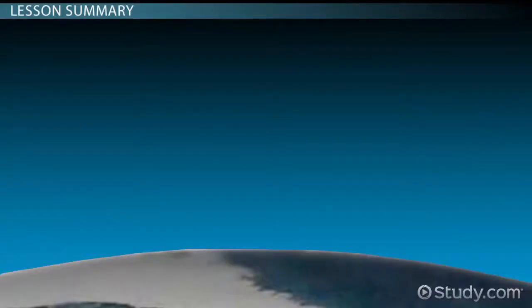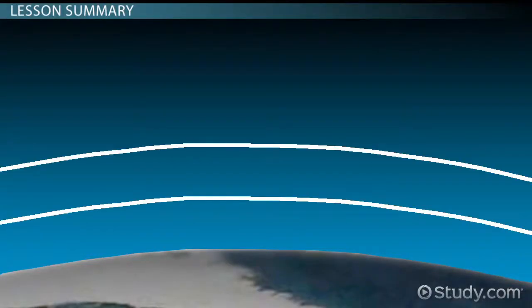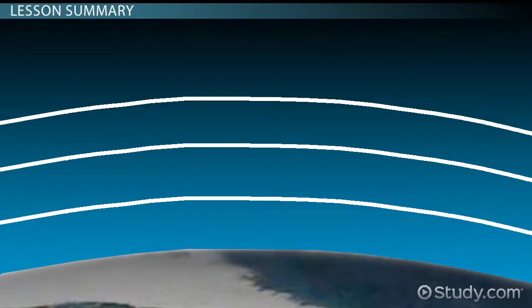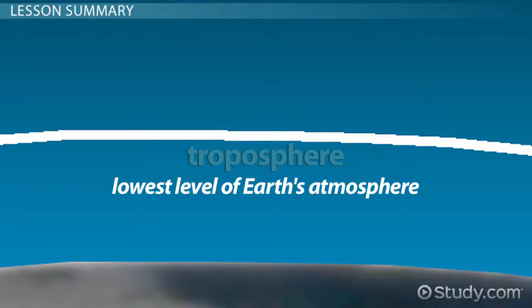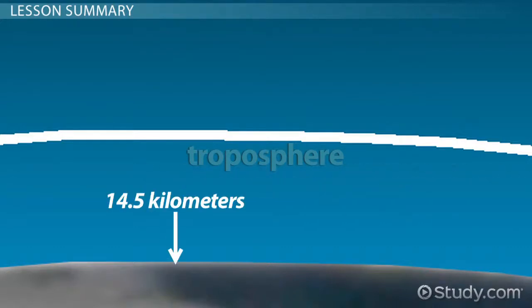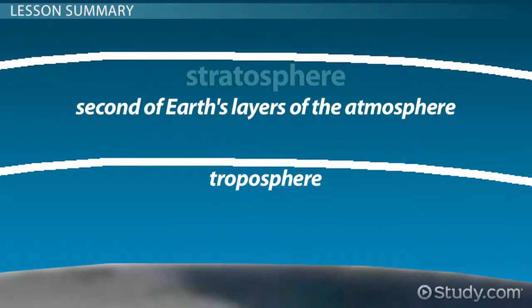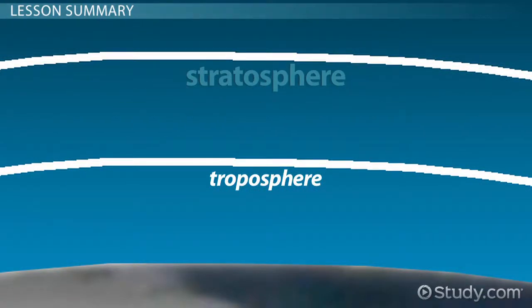Let's review. In this lesson, we looked at the different layers of the Earth's atmosphere. There are five of them worth noting. The troposphere is the lowest level of Earth's atmosphere and extends from the surface to about 14 and a half kilometers. The stratosphere is the second of Earth's layers of the atmosphere and extends for 40 kilometers past the troposphere.